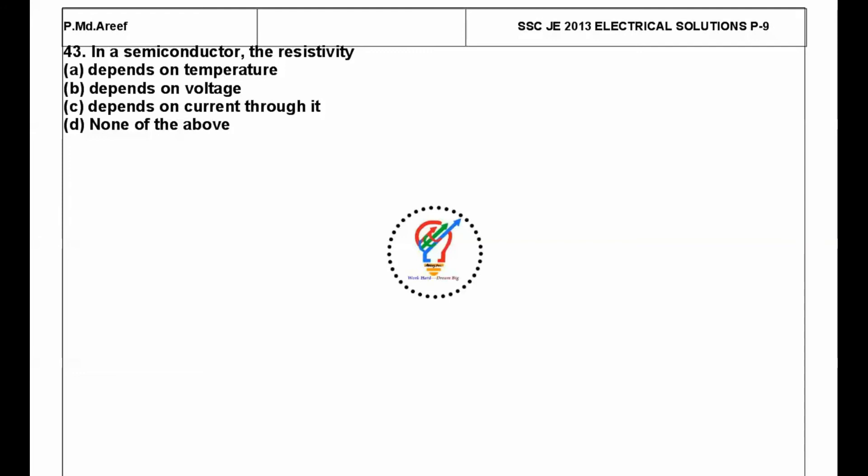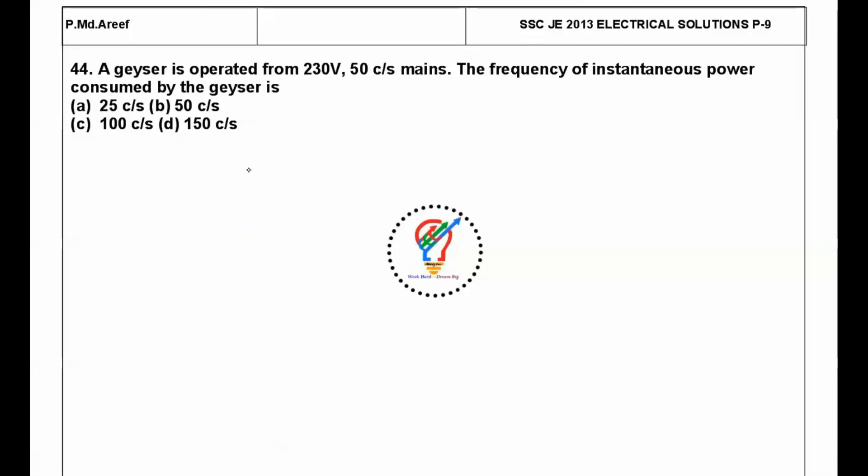The next question is: in a semiconductor, resistivity depends upon? The given thing is resistivity ρ, not R. Resistivity depends upon temperature. If they ask for resistance, it depends upon voltage or current. But resistivity depends only on temperature, not on voltage and current. It depends upon the property of material.